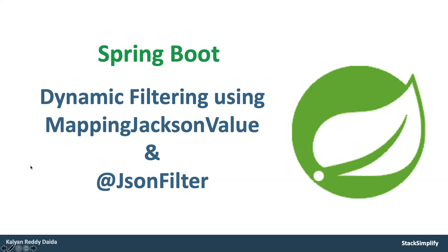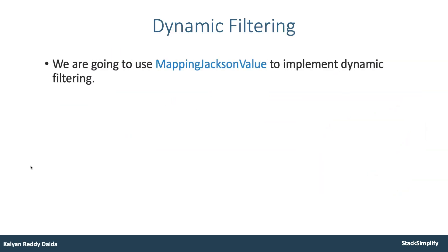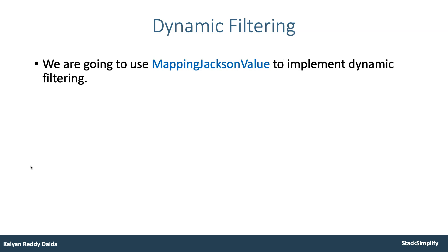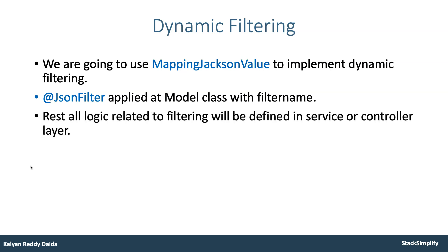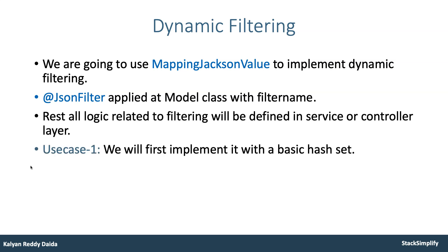Welcome back. In this lecture we are going to implement Spring Boot's dynamic filter using MappingJacksonValue and JSON filter. We are going to use MappingJacksonValue to implement the dynamic filtering. We will use the annotation named JSON filter applied at the model class with the filter name which we are going to create in our controller or service layers.